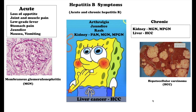Signs and symptoms of hepatitis B range from mild to severe and usually appear about 1 to 4 months after infection. Symptoms of acute hepatitis B include: loss of appetite, joint and muscle pains, low-grade fever, stomach and abdominal pain, yellowing of skin and sclera (jaundice), nausea, vomiting, dark urine, clay-colored stool, and skin rash. Most people with chronic hepatitis B do not have any symptoms and remain symptom-free for decades.